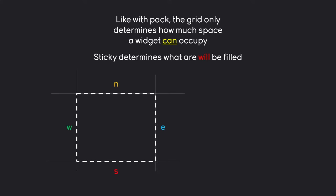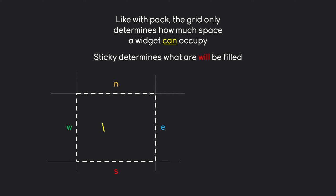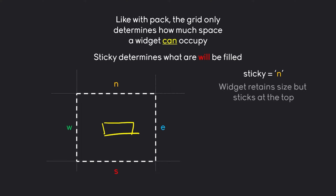This one works like this. This could be one cell inside of our table, and we can specify to which border the widget is going to stick. In here, we have north, east, south, and west. By default, a widget is always going to be right in the middle. However, if we specify sticky north, then the widget is going to stick at the top.